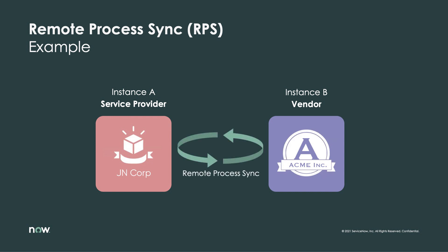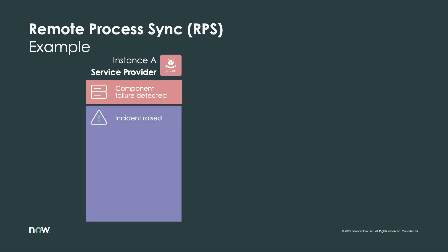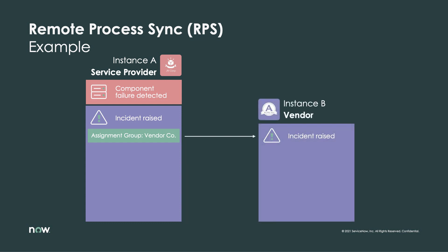The two companies have established an automated workflow to handle equipment repairs and replacement using Remote Process Sync. Whenever a component malfunction is detected by the service provider, an incident is raised. Should that component failure fall under the agreement with their vendor, the service provider team need only assign the vendor to the incident. With Remote Process Sync in place, the service provider instance will send a predefined set of data to the vendor, triggering an automation that will handle the data appropriately.